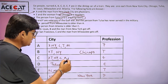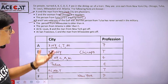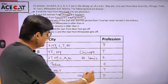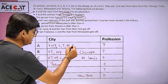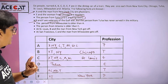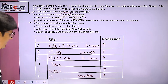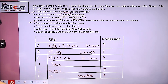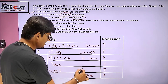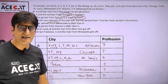At San Francisco, C and the man from Milwaukee get off — meaning C does not belong to Milwaukee. Now, for C, five cities are already crossed out, so the remaining option is Saint Louis. C belongs to Saint Louis. Since C is assigned to Saint Louis, A cannot be from Saint Louis. Now for A, five cities are also crossed out, and the only remaining city is Atlanta — so A belongs to Atlanta. With five cities assigned, the only city left for E is Milwaukee, so E belongs to Milwaukee.